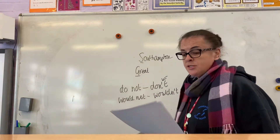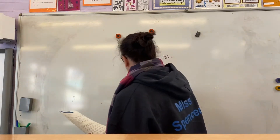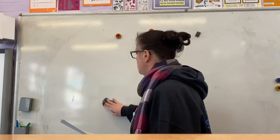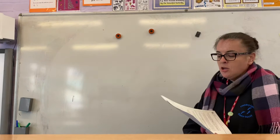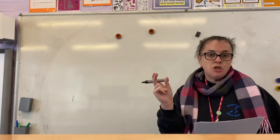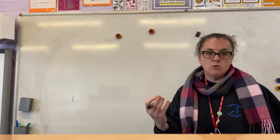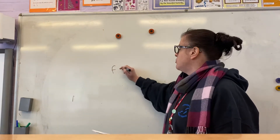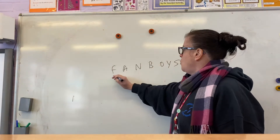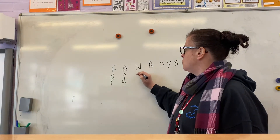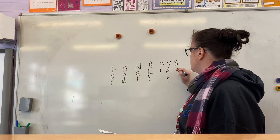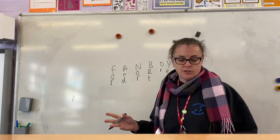Moving on to our different conjunctions. We've now got coordinating conjunctions. We spoke about subordinating conjunctions because they start subordinating clauses. Coordinating conjunctions are joining two main clauses to create what we call a compound sentence. We remember them because we use FANBOYS: For, And, Nor, But, Or, Yet, So. Those are our coordinating conjunctions.